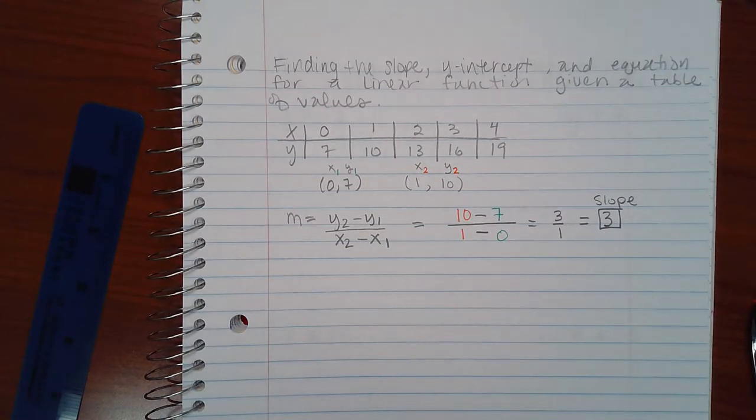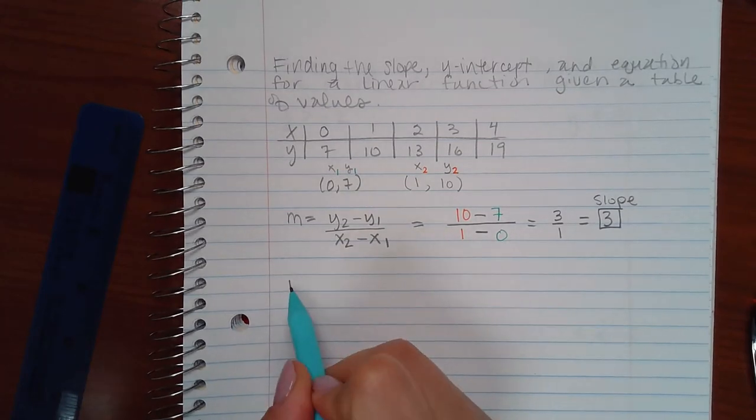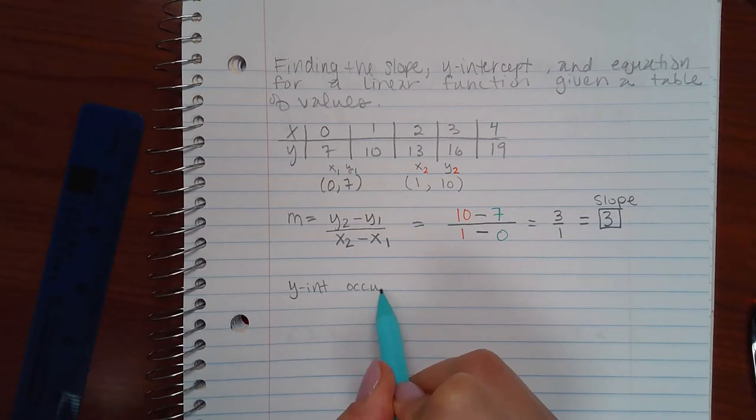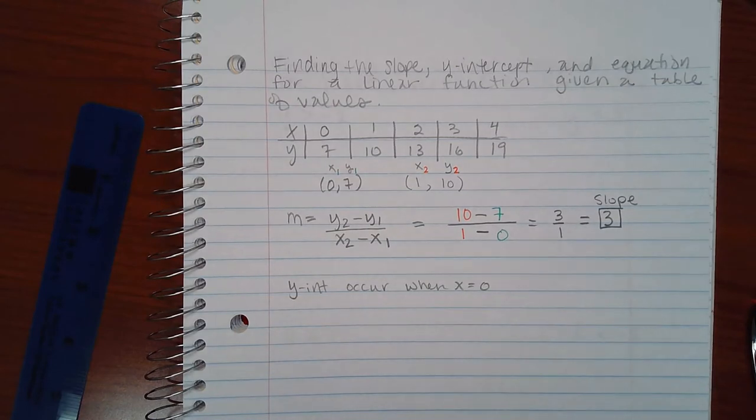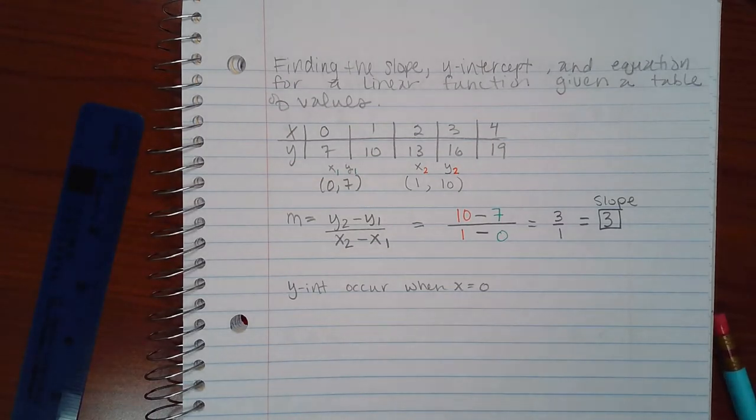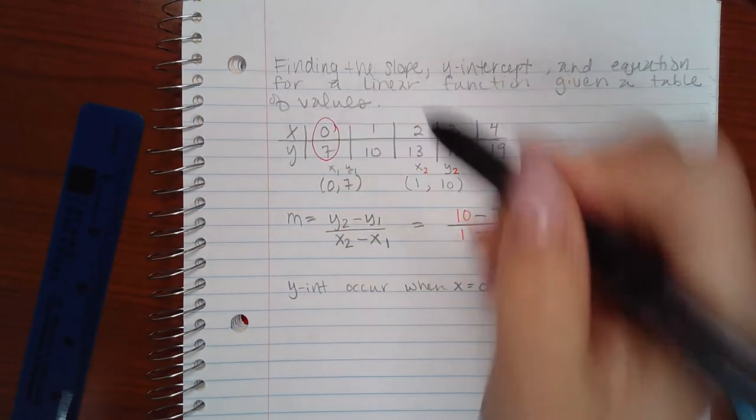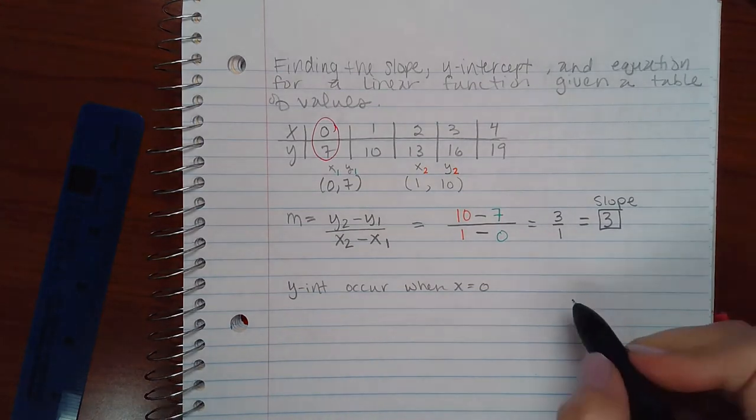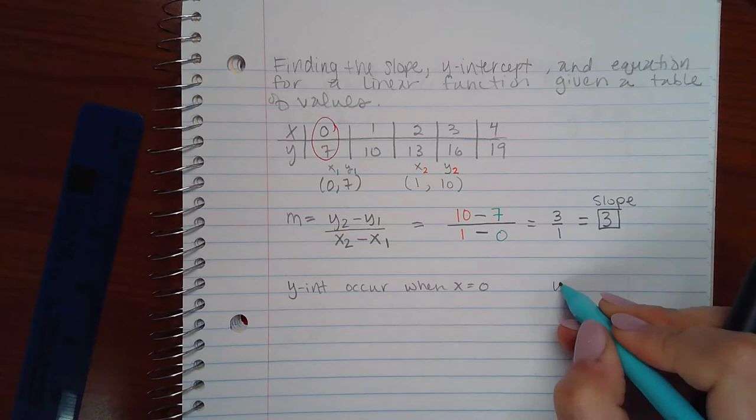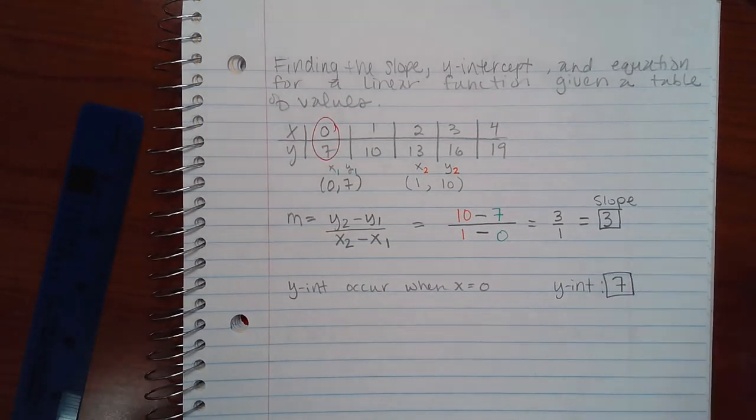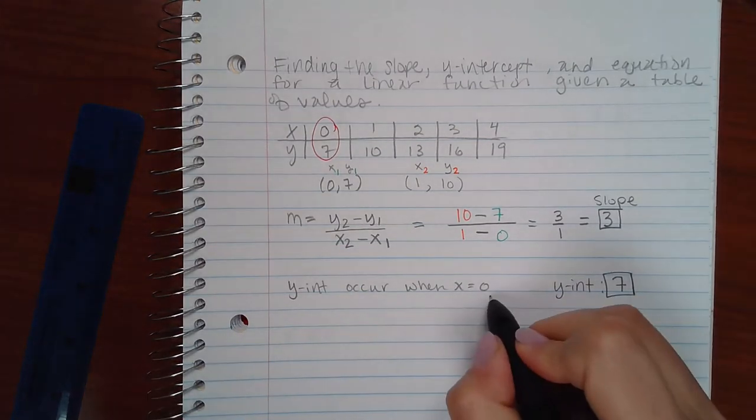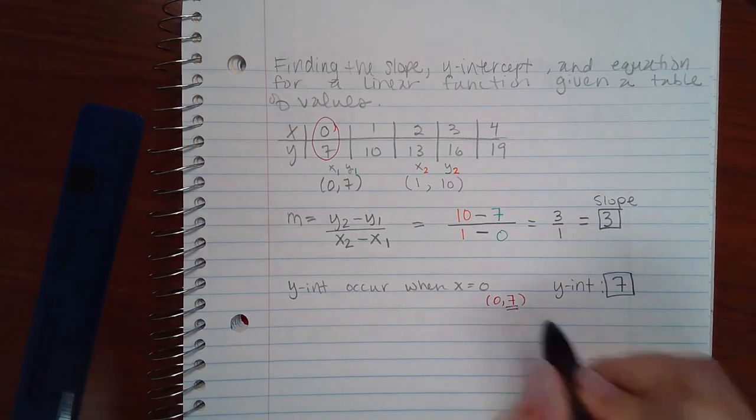The next thing they're going to want me to find is the y-intercept. Now, remember what we learned about y-intercepts—y-intercepts occur when x is equal to zero. So look at the chart, and do you see the coordinates where x is equal to zero? We do. So that would be these coordinates right here. The x is zero in those coordinates. So then, in that case, the y-intercept would be the y-value, which is seven. So we are looking at the point zero comma seven, and all we need is that y-value.